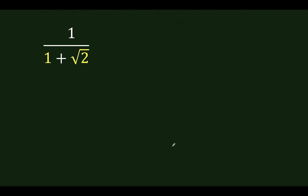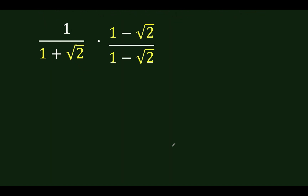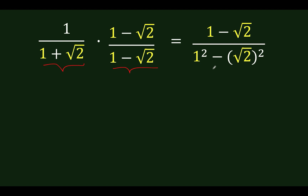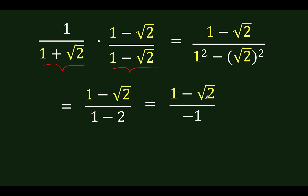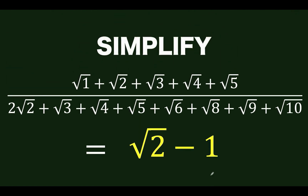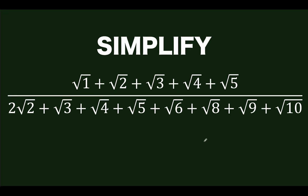This is not yet in its rationalized form, so let's rationalize by multiplying by the conjugate of 1 plus square root of 2, which is 1 minus square root of 2. This results in a difference of two squares. Applying the difference of two squares formula, we get 1 squared minus the square of square root of 2, which is 1 minus 2, equal to negative 1. So the result is 1 minus square root of 2 over negative 1, which simplifies to square root of 2 minus 1. And this is the simplified form of this given complicated rational radical expression.